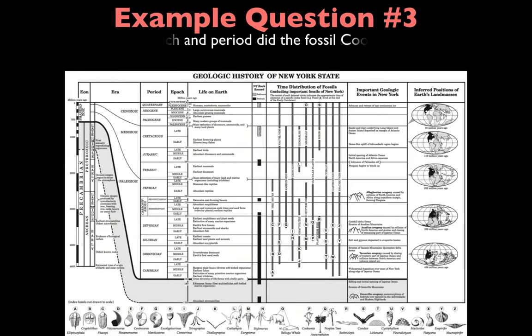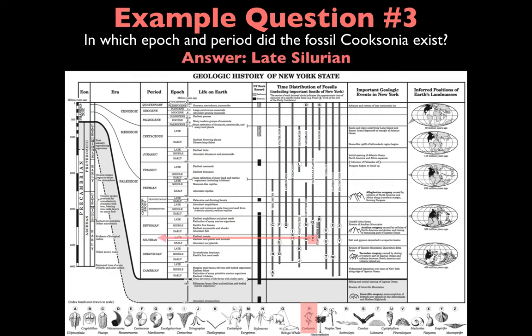Question 3: in which epoch and period did the fossil Cooksonia exist? Cooksonia is a specific index fossil found on the bottom of page 9 — specifically fossil P. Once you locate fossil P in the chart, bring it over to the period column and you'll see that the epoch is Late and the period is Silurian, so Cooksonia existed during the Late Silurian.